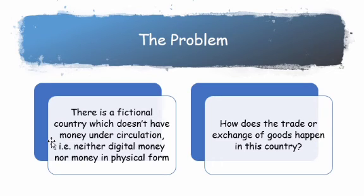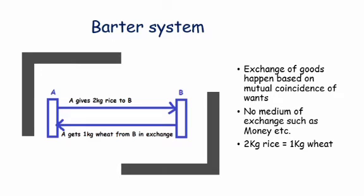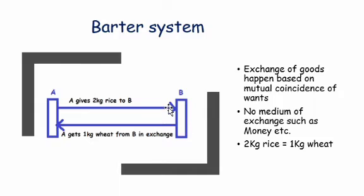Going back to the problem statement we discussed initially — there is a fictional country which does not have money under circulation. How does trade happen in this country? The answer lies in the barter system. Here is an example: A gives 2 kg of rice to B, and A gets 1 kg of wheat from B in exchange. A doesn't want rice, so he gives it to B. B receives rice and gives away 1 kg of wheat to A. So A wants wheat and B wants rice — a transaction happens because of the mutual coincidence of want. The barter system is where exchange of goods and services happens based on mutual coincidence of want, and it does not typically involve money.